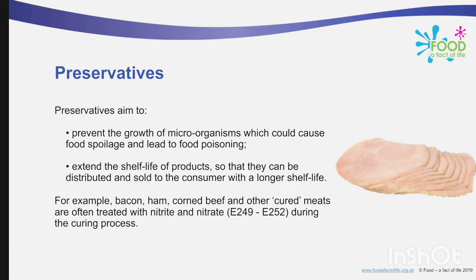Preservatives aim to first prevent the growth of microorganisms which could cause food spoilage and lead to food poisoning, and second extend the shelf-life of products so that they can be distributed and sold to consumers with a longer shelf-life. For example, bacon, ham, corned beef and other cured meats are often treated with nitrites and nitrates E249–E252 during the curing process.